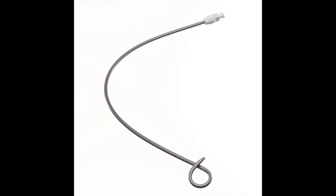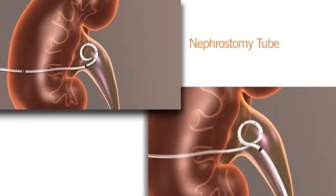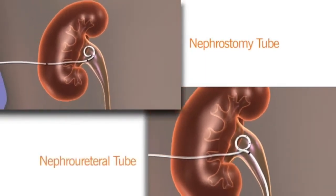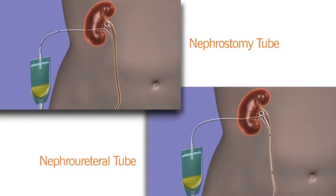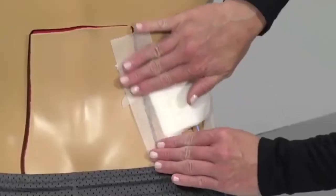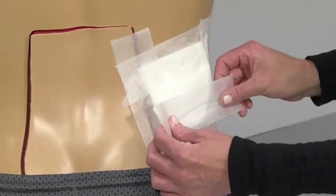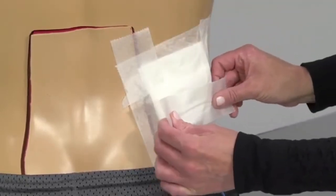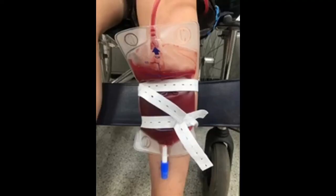This pigtail position helps the nephrostomy tube stay in place. The final position is confirmed with a second injection of contrast medium. If the patient requires the nephrostomy for a longer time, the nephrostomy tube will need to be exchanged periodically.